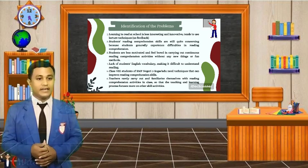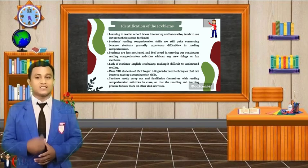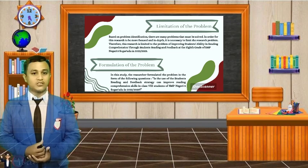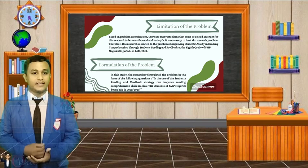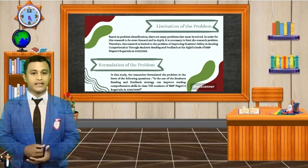Class A-grade students' English vocabulary is an area where technique can improve reading comprehension skills. The Limitation of the Problem: Based on problem identification, there are many problems that must be sorted. In order for the students to be more focused, it is necessary to limit the research problems. Therefore, the research is limited to the problem of improving students' ability in reading comprehension skills using reading and feedback at class A of SMP in 2022-2023.